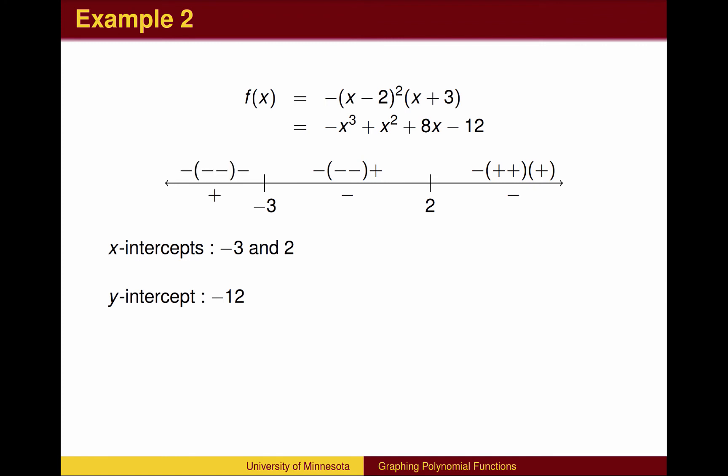If we choose a value for x that is less than -3, we have the original negative sign, a double negative for the x - 2 factors, and a negative for the x + 3 factor. Altogether, the product has four negative signs, and therefore is positive.